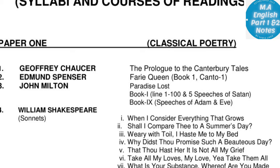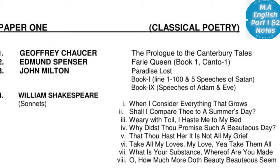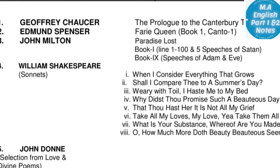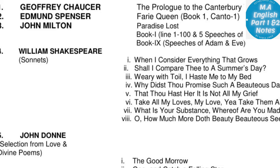The first paper is of Classical Poetry. In Part One of MA English, the first poet is Geoffrey Chaucer and the book is The Prologue to the Canterbury Tales. Next is Edmund Spenser's Fairy Queen, Book One, Canto One. Then John Milton's Paradise Lost — Book One and Book Nine. From Book One, lines 1 to 205; speeches of Satan; from Book Nine, speeches of Adam and Eve are included.